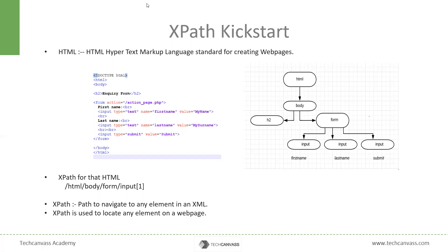On the right hand side, we can see its tree structure. So HTML is the root element. Then comes the child body, which has two children: H2 and form. And form has three children: input, input, and input. So if we want to navigate to this input tag, we will choose the path as HTML, then body, then form, and then input.